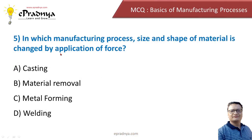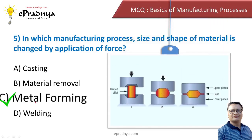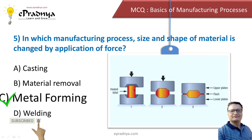Next question: in which manufacturing process is the size and shape of material changed by the application of force? Options: casting, material removal, metal forming, and welding. The correct answer is metal forming. In metal forming, force is applied to change the shape and size of a material. For example, in forging, material heated to red temperature has compressive pressure applied to it to change its shape.